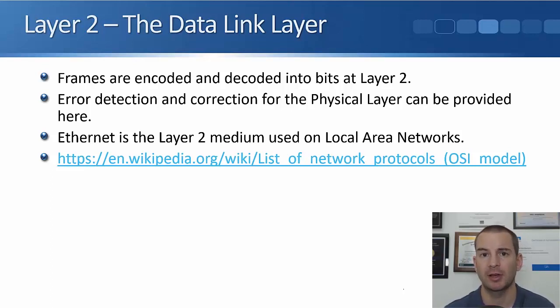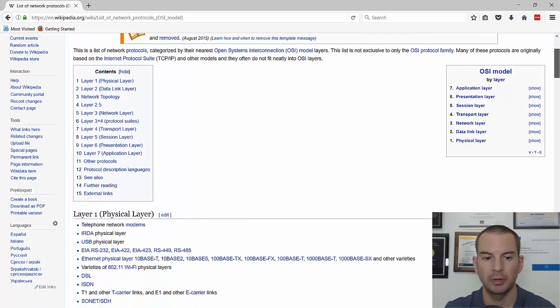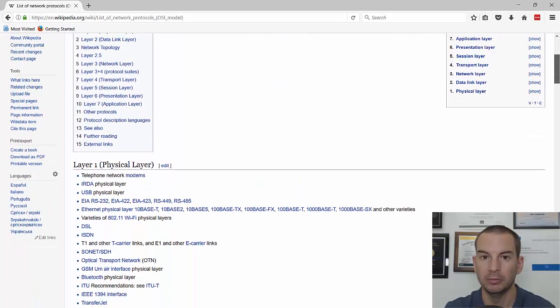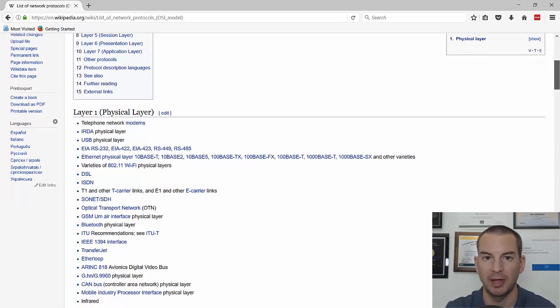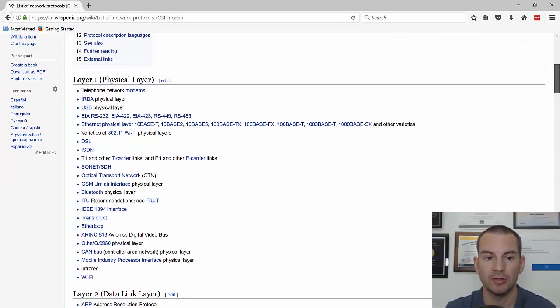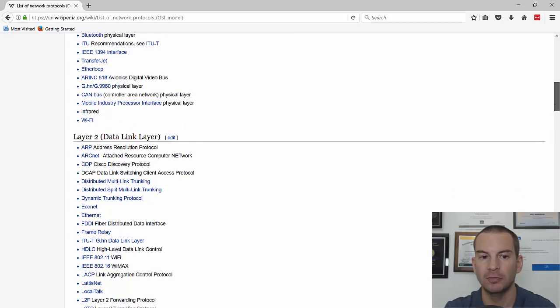Before we start getting into Ethernet, let's have a look at some of the different Layer 2 protocols. I've got a link going to a page on Wikipedia with a list of network protocols. Let's open that up now. Here at the top it lists some of the common Layer 1 protocols like ISDN, DSDL. There's a lot of legacy protocols still listed here as well.